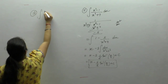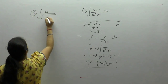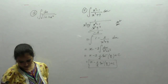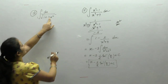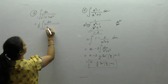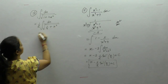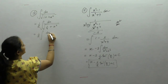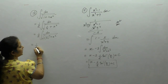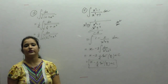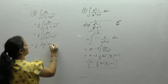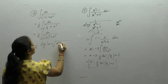Next is the integral of 1 upon square root of (1 plus 4x square). Take 4 common: square root of 4 is 2, so we get 1 by 2 times dx upon square root of (1 by 4 plus x square), which is 1 by 2 times dx upon square root of (1 by 2 whole square plus x square). The formula: integral of 1 upon square root of (a square plus x square) equals log of (x plus square root of x square plus a square).